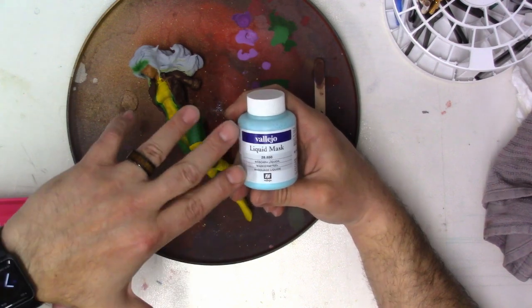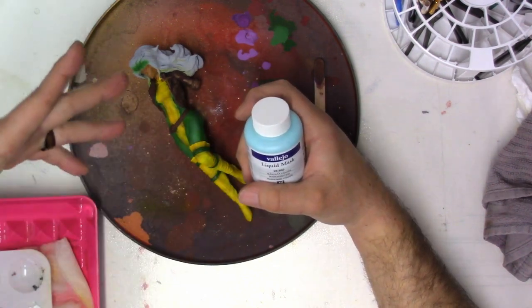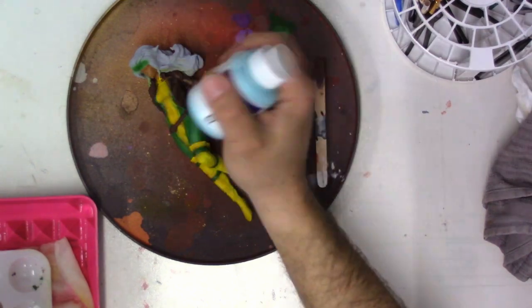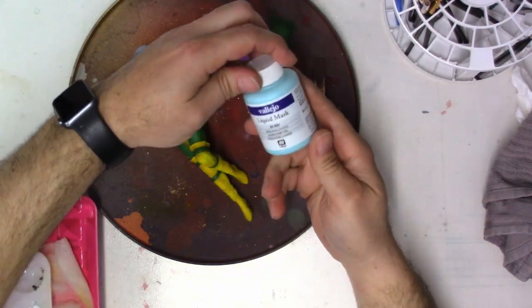Basically it is what it says it is - it's a liquid mask. It's a paint that you're going to put over it and then supposedly you peel it off. Shake it up a little bit, get everything nice and moving around. It's by Vallejo.